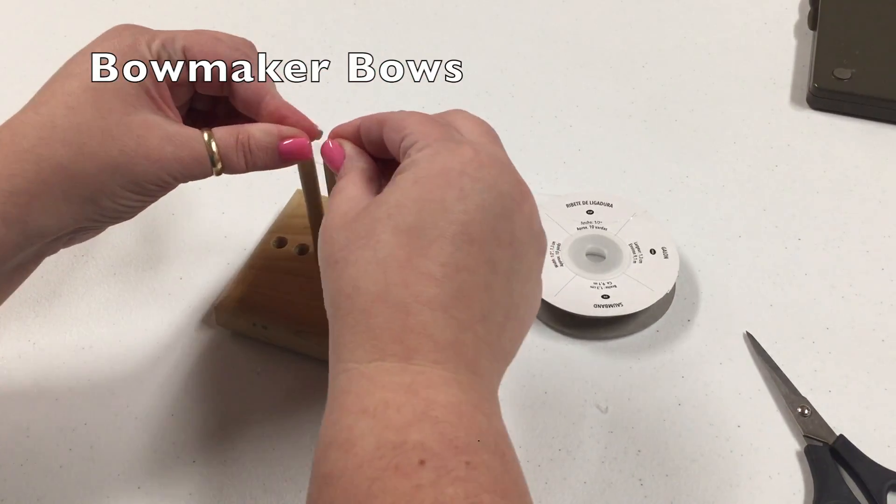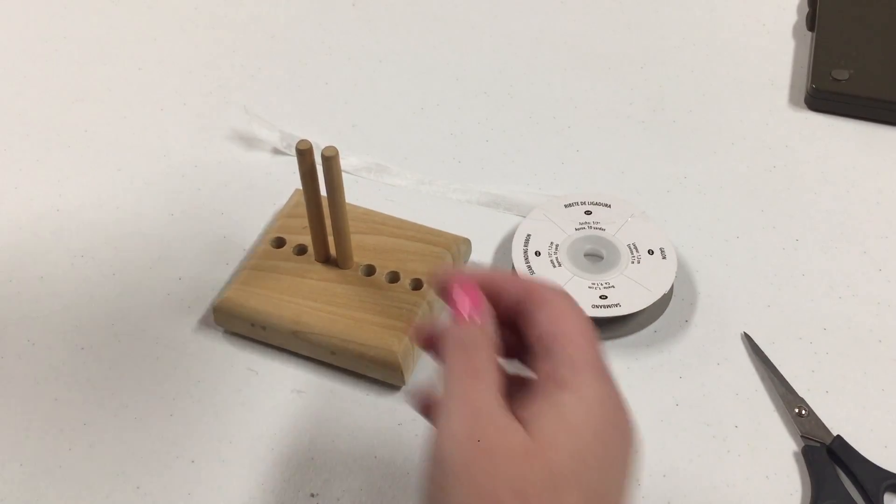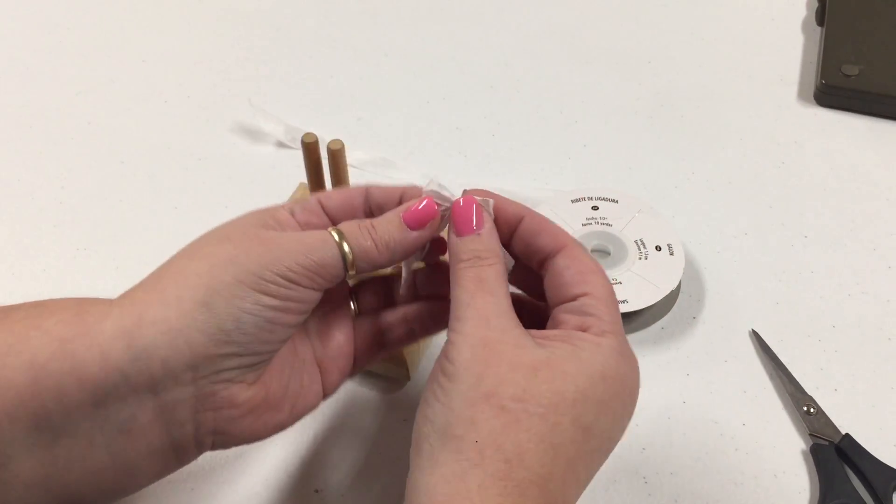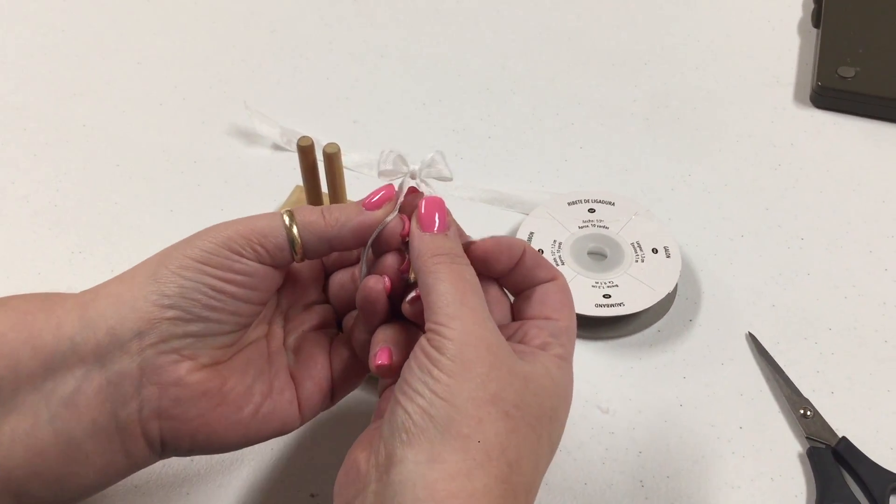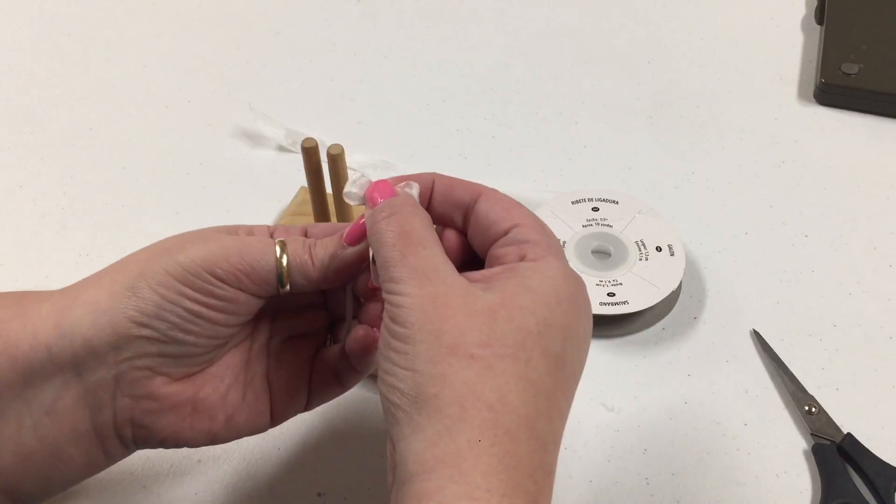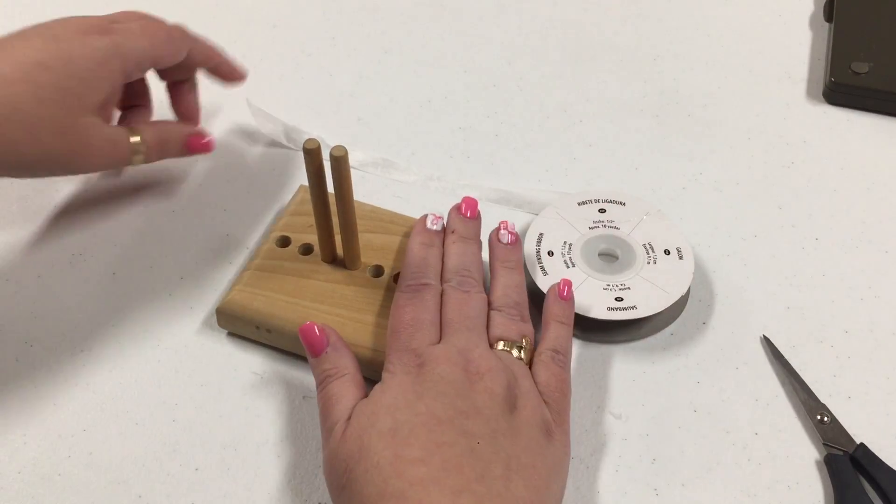I have my pegs together very close because sometimes when you're tying a bow, friends of mine said that they have trouble getting the knot super tight, so I'm going to show you how to make a bow with this bowmaker.